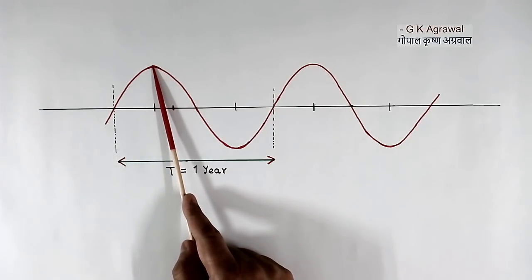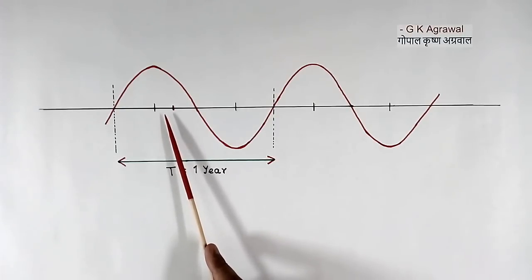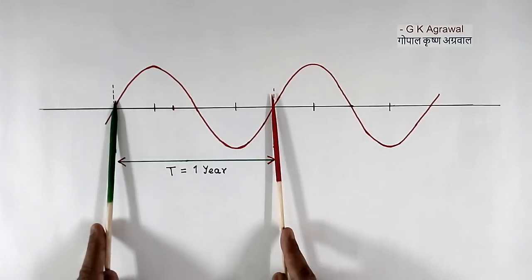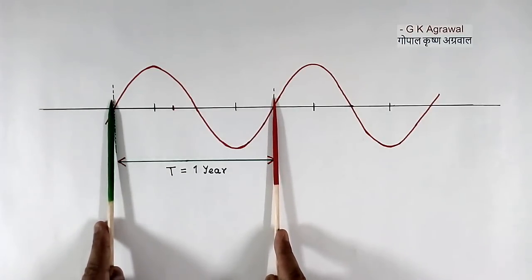Now when we measure the voltage using normal multimeter or CRO, they will not wait 1 year to measure the RMS value. They will take hardly 2 to 3 seconds, and in 2 to 3 seconds whatever value comes, they will display.